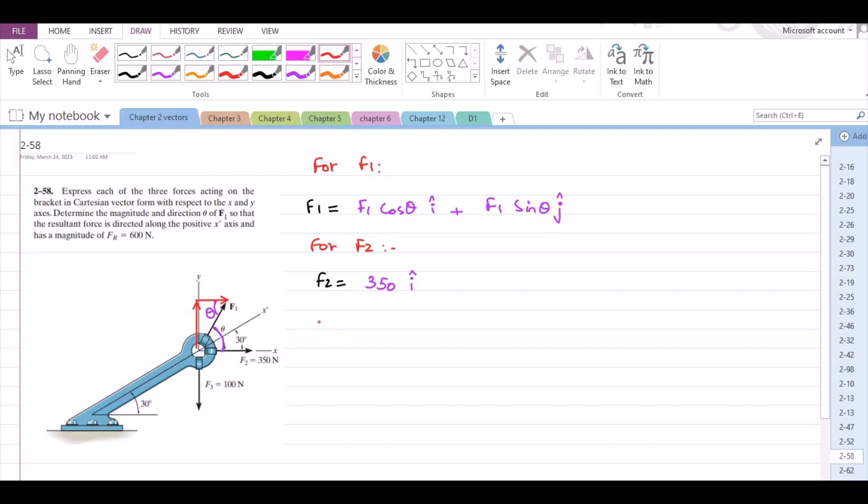Now for F3, F3 also has only one component, that is the vertical component, and it is directed in the negative sense of the positive y axis. So it is negative 100 j.